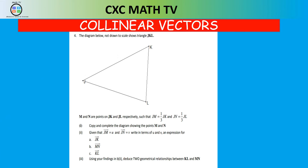In a triangle JKL, M and N are points on JK and JL respectively such that JM = (1/3)JK and JN = (1/3)JL. Given JM = u and JN = v, write expressions in terms of u and v for vectors JK, MN and KL, then deduce two geometrical relationships between KL and MN.